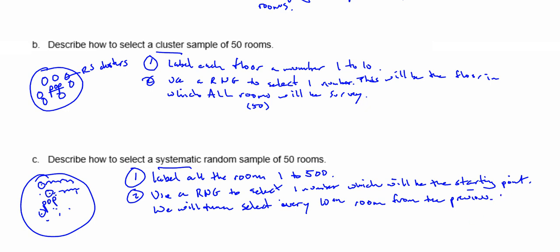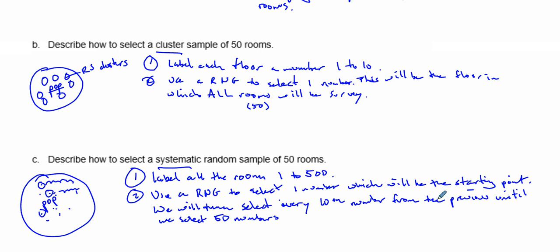From the starting point, we then select every 10th number from the previous one until we have selected 50 numbers. These 50 numbers will be the rooms that are surveyed.